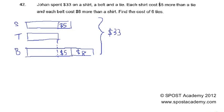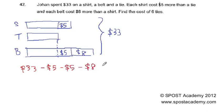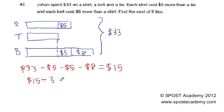So from this model, we can see that what we should do is first use $33 minus $5 minus another $5 and minus another $8. That will give us $15. After which, we use $15 divided by 3 units, which gives us $5.